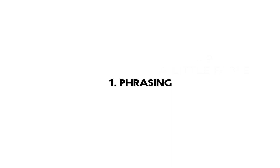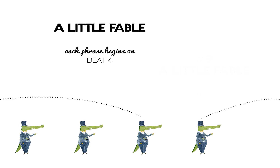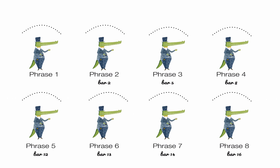Phrasing is the first thing. A Little Fable has got eight phrases, and each of those eight phrases that I've identified begins on beat four. I will just say this because phrasing is one of those subjective areas, and I would encourage you to go through the score and consider alternative phrasing. You might agree with what I've done, you might disagree, and you may come up with any number of other alternatives.